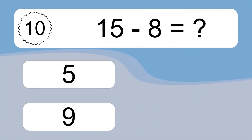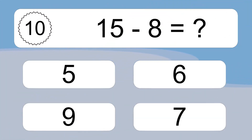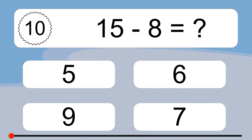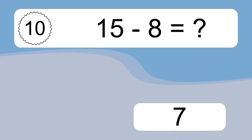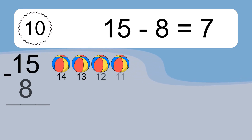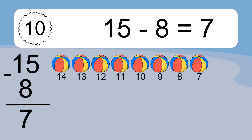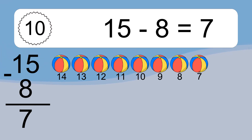15 minus 8 equals what? 15 minus 8 equals 7. Let's count it: 14, 13, 12, 11, 10, 9, 8, 7.